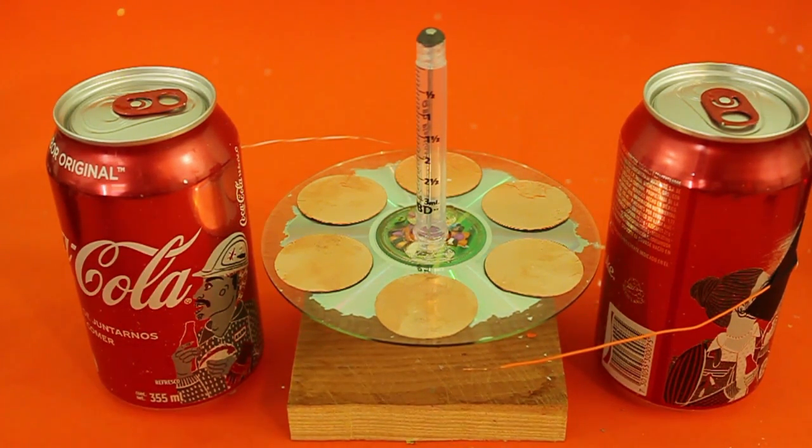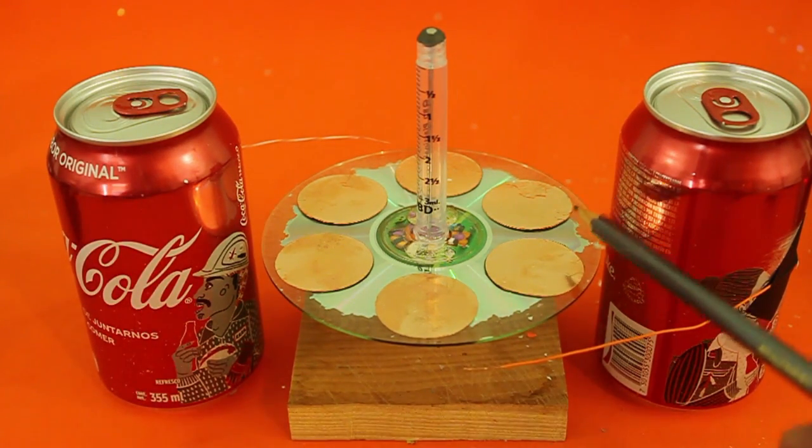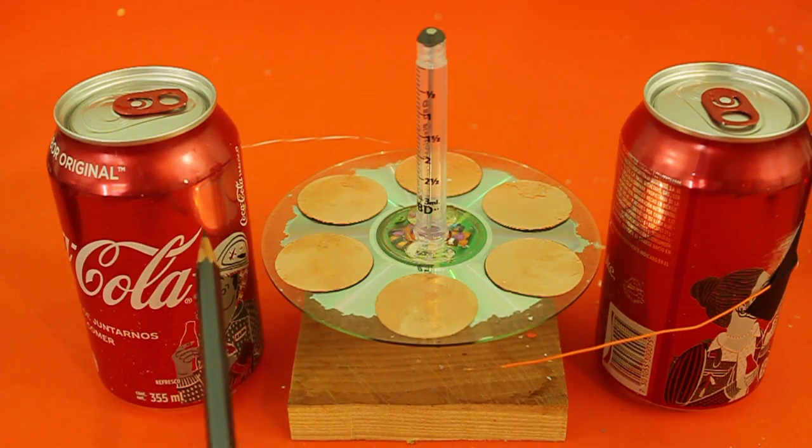So, these disks are repelled from this can and tend to move in this way. At the same time, they are also attracted to the negative can, so they are repelled from here and attracted to here.